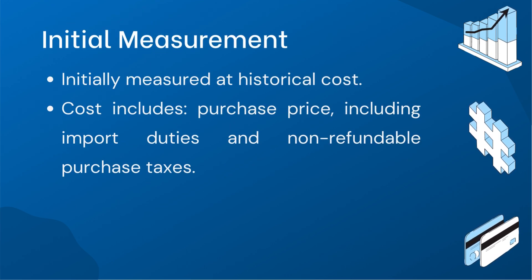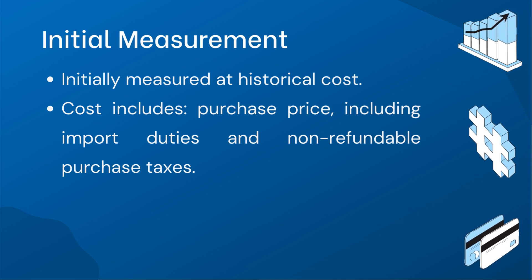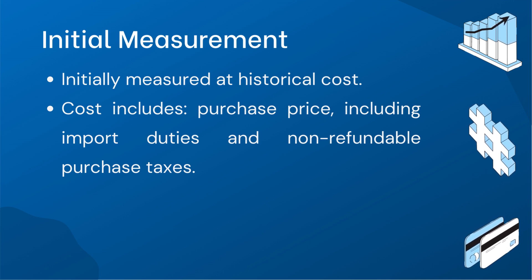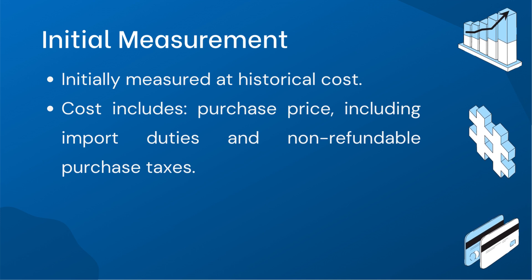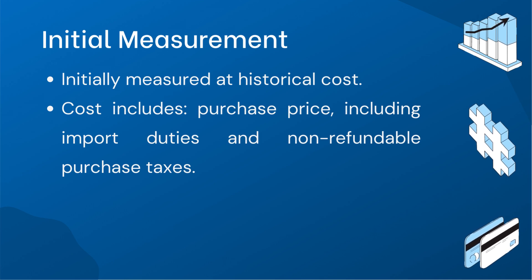Fixed assets are initially measured at historical cost. This historical cost includes the net purchase price, along with directly attributable costs such as fees, delivery, and installation. Additionally, any interest related to the fixed asset's acquisition, construction, or production is also included. However, it's critical to note that site preparation costs for a constructed building are not considered part of the historical cost.